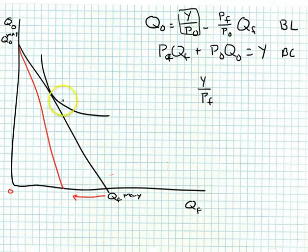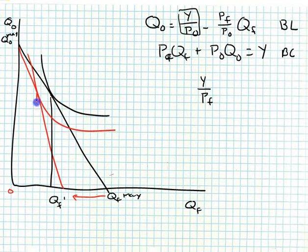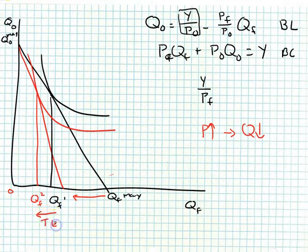Thus far we've identified the point of tangency of the original budget line and the indifference curve and called that QF1. We also looked at the same individual and called that QF2. We saw that when price increases, quantity decreases — and we call this movement the total effect.